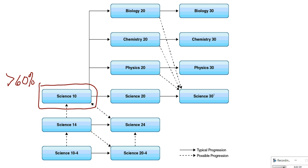After successful completion of Science 10, you have several options depending on your interest, aptitudes, and goals. One option is to take Science 20, which is a general science course covering topics in biology, chemistry, physics, and earth science.